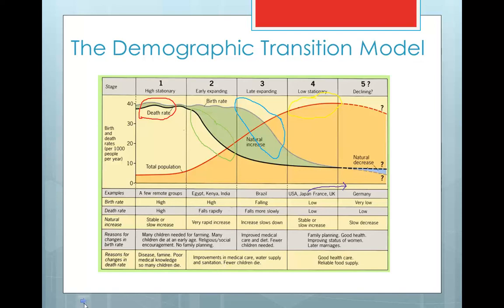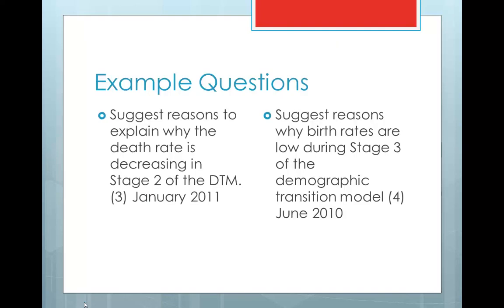Now the exam board can ask you one of two things in relation to this. They can ask you to start completing one of these models if they'll give you a part model, or they're going to ask you exam questions based on this. These next two questions are examples of questions which have been asked at various different points in time and could be adapted and changed depending on the want of the examiner. So for instance, the first question suggests reasons to explain why the death rate is decreasing in stage two of the demographic transition model could be translated into suggest reasons to explain why the death rate is high in stage one. They can be fairly flexible with these questions. A similar thing can be done with the question on the right. Why don't you pause the video and have a go at these two questions.